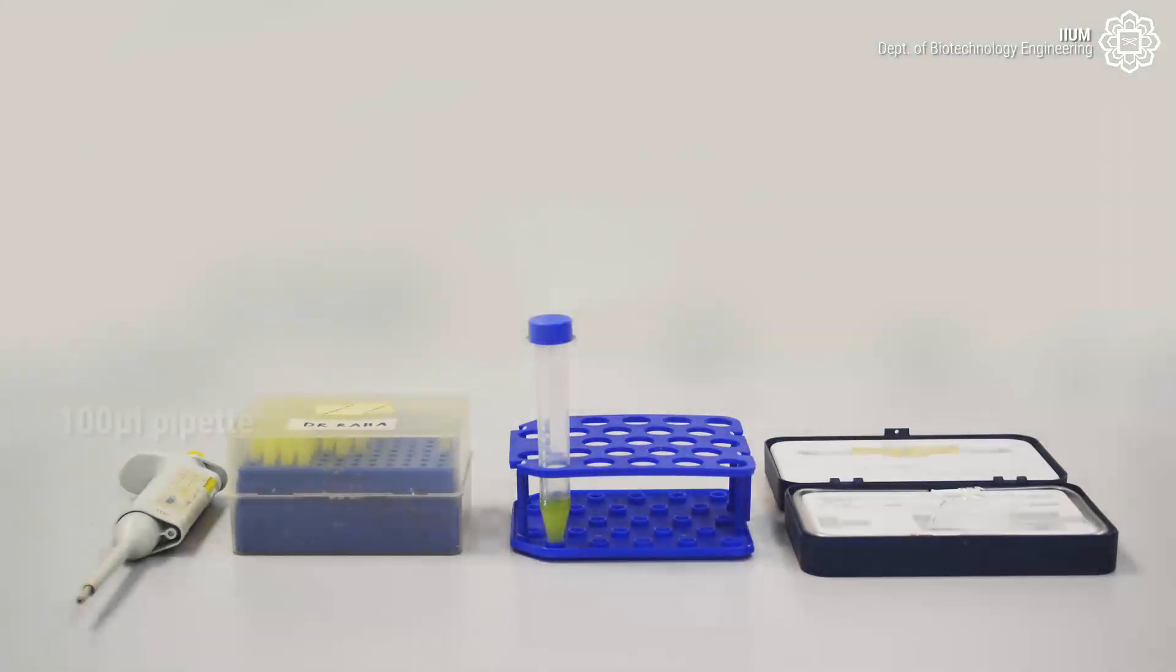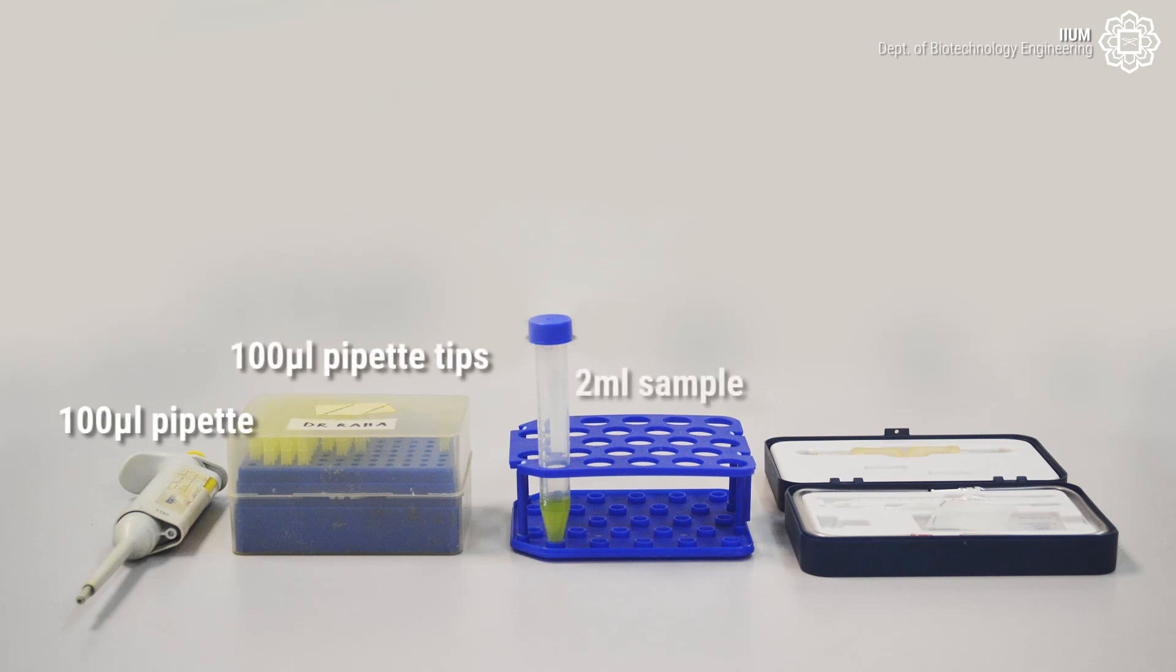For cell counting, we need 100 µL pipette, 100 µL pipette tips, 2 ml sample, and hemocytometer.